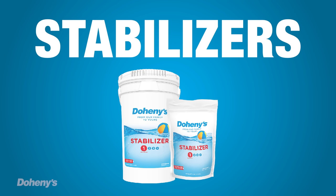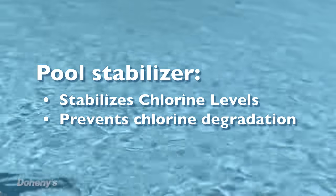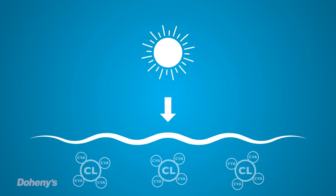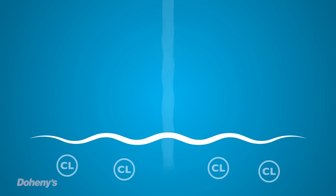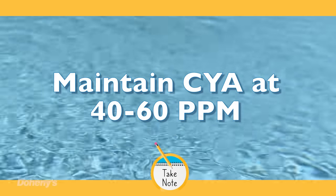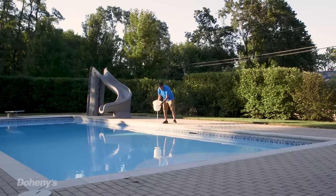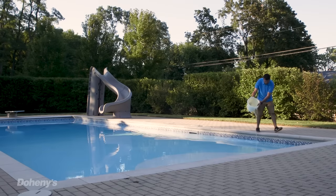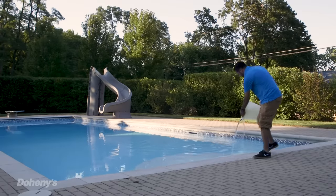Now we'll take a look at pool stabilizer — it's essentially cyanuric acid, or CYA. It's in your pool to stabilize the chlorine levels. Chlorine is vulnerable to heat and sunlight; when exposed to UV rays, chlorine evaporates rapidly. Without sufficient CYA, chlorine is reduced by as much as 95 percent within two hours. Stabilizers act to slow down the chlorine's degradation. You want to maintain your CYA levels at 40 to 60 parts per million. If your water test shows low levels of CYA, add the appropriate amount of Doheny's pool stabilizer and conditioner. Be careful not to over-stabilize, because the only way to remove stabilizer is to drain water from your pool. Just follow the instructions on the packaging and you'll be fine.